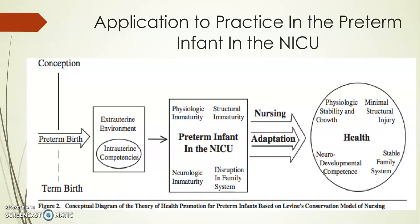There are many challenges for the family system due to grieving the loss of a healthy infant, disruption in bonding and attachment, and parenting a child who could possibly have special needs. Adaptation has the goal that the preterm infant attempts to generate an integrated adaptive response to fit the extra-uterine environment. This diagram helps visualize how the conservation model can help nurses make interventions to promote the health and conservation of the preterm infant.